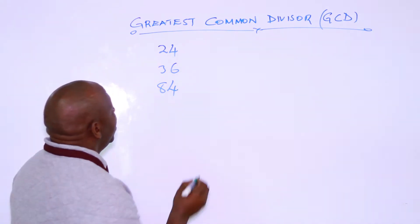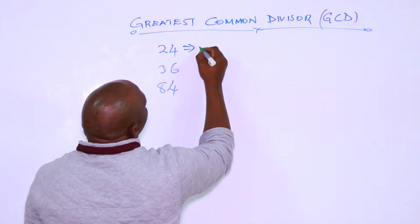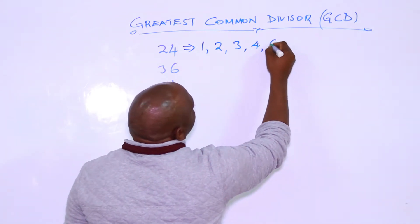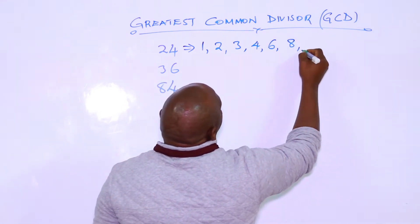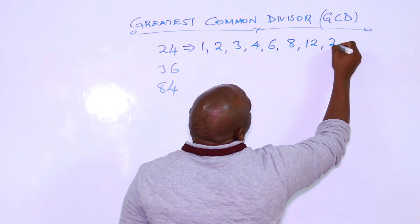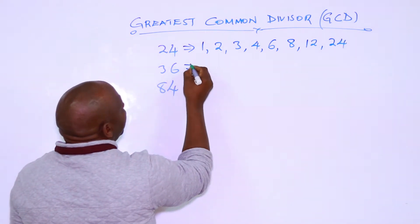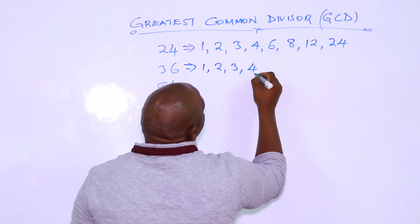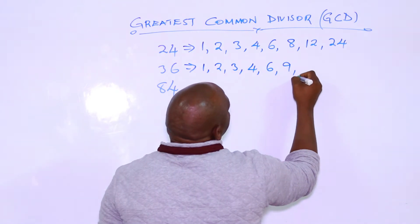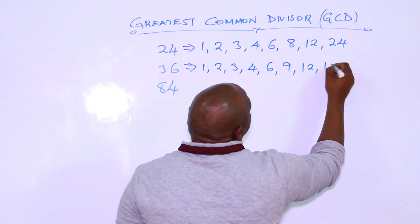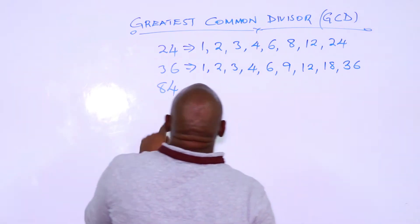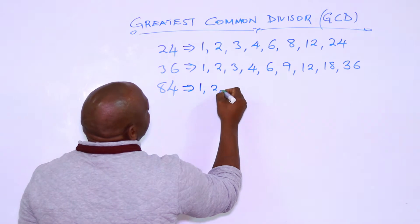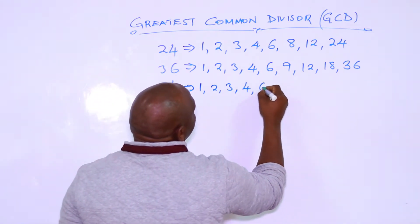So we start by getting the divisors of 24, which are 1, 2, 3, 4, 6, 8, 12, and 24. The divisors of 36 are 1, 2, 3, 4, 6, 9, 12, 18, and 36. And the divisors of 84 are 1, 2, 3, 4, 6, 7, 12, 14, 21, 28, 42, and 84.